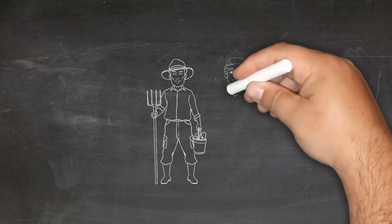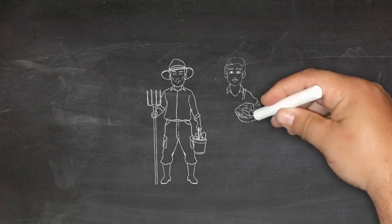Initially, those enslaved worked alongside white planters in the tobacco fields.